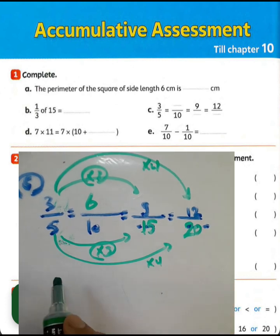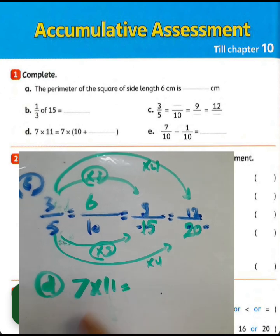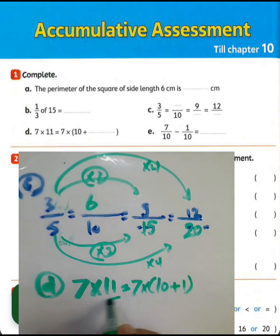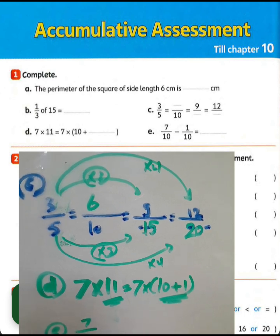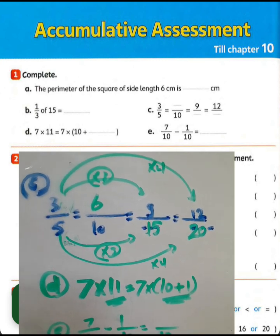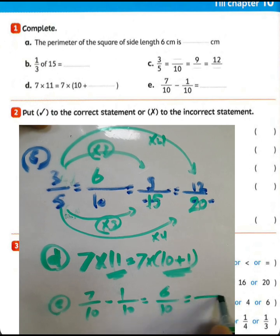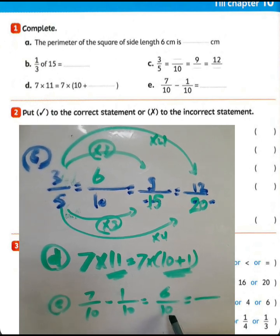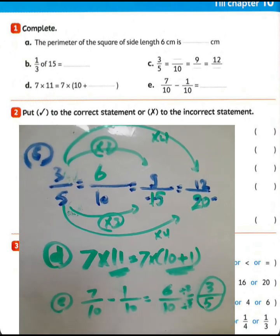Question letter D: we use the distributive property for 7 times 11. 7 times 11 equals 7 times (10 plus 1), because 11 equals 10 plus 1. Question letter E: 7 over 10 subtract 1 over 10. We write the denominator 10 and 7 minus 1 equals 6, giving 6 over 10. Then simplify by dividing numerator and denominator by 2: 6 divided by 2 equals 3 and 10 divided by 2 equals 5, so the result is 3 over 5.